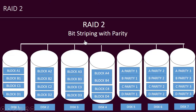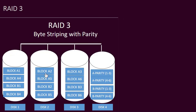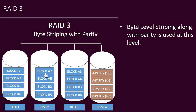RAID Level 2 uses bit-level striping. This consists of splitting the bits of each byte across multiple disks. Here you can see four hard drives are used for storing the bits of each particular byte. Parity — the simplest technique for detecting and correcting errors — is used, and extra disks are used for storing the parity information. However, this level was not implemented accurately and is hardly used.